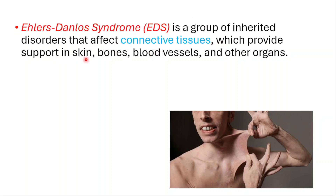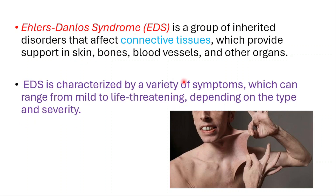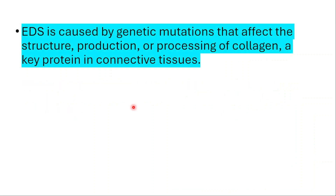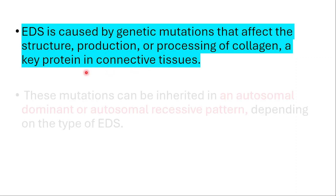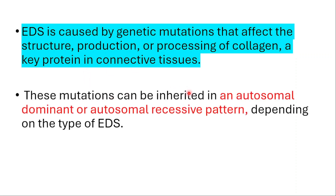which provides support in the skin, bones, blood vessels, and other organs. This syndrome affects connective tissues around the body. It's characterized by a variety of symptoms, which can range from mild to life-threatening, depending on the type and severity. It's caused by genetic mutations that affect the structure, production, or processing of collagen, a key protein in connective tissues. These mutations can be inherited in an autosomal dominant or recessive pattern, depending on the type.